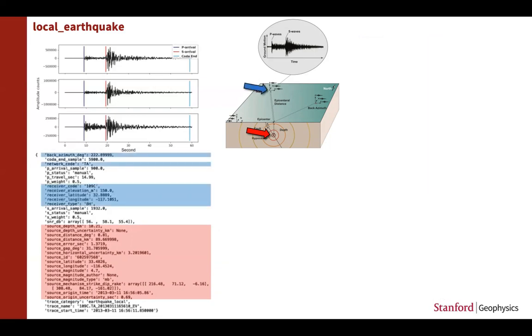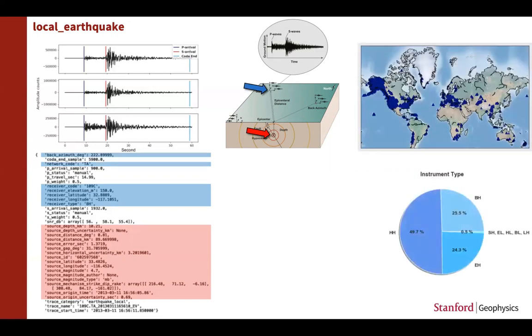The second group of attributes are related to the receivers or recording stations, such as their absolute geographic location, the relative location to the source, and the instrument type.